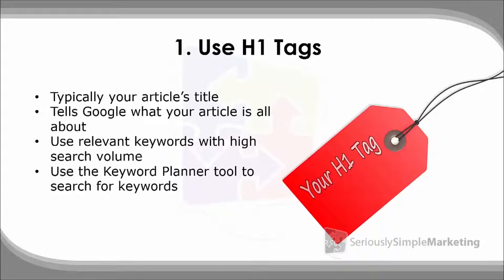For example, instead of something generic, if I want to talk about breakfast foods in Austin, I might say 'The 10 Best Breakfast Foods in Austin.' That gets the keyword phrase into the title tag and will help with SEO. You can also use the keyword planner tool to determine what people are actually searching for. It's a free tool from Google — just search 'keyword planner tool' and type in keyword phrases to see how many people are searching for them.